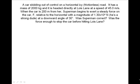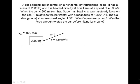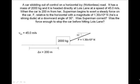To help us solve the problem, we must first sketch a picture of the situation that includes all of the important data. The 2000 kilogram object has a starting velocity of 45 meters per second. Superman's force F is 1.30 times 10 to the 4th newtons acting at 30 degrees below the horizontal. After a distance of 200 meters, the car comes to stop.